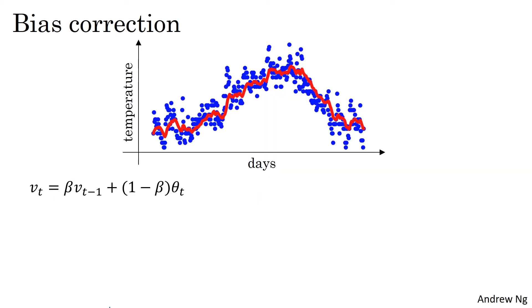In the previous video, you saw this figure for beta equals 0.9, this figure for beta equals 0.98. But it turns out that if you implement the formula as written here, you won't actually get the green curve when beta equals 0.98. You actually get the purple curve here. And you notice that the purple curve starts off really low. So let's see how to fix that.